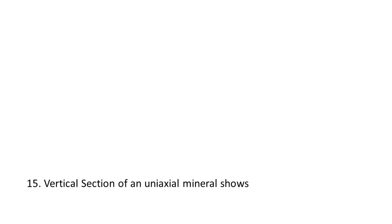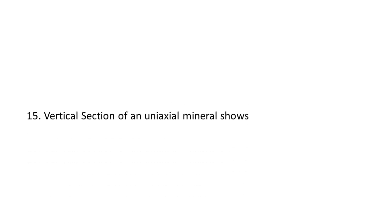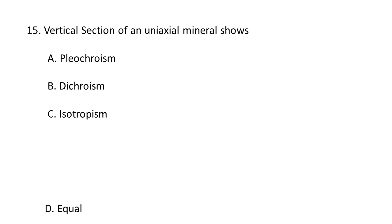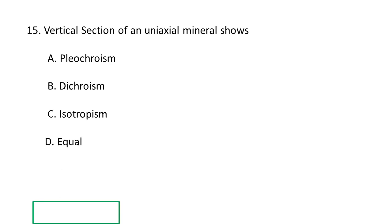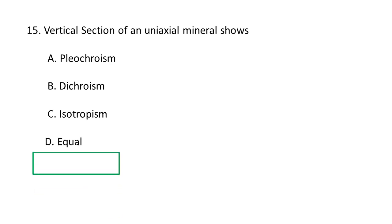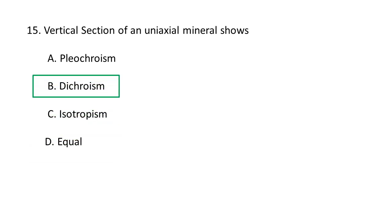Next question: Vertical section of a uniaxial mineral shows — A. pleochroism, B. dichroism, C. isotropism, D. equal. Vertical section of a uniaxial mineral shows dichroism. Dichroism is a property of uniaxial crystals that causes them to exhibit two different colors when viewed from different directions, due to the two vibration directions in uniaxial minerals: X and Z. B is the correct option.